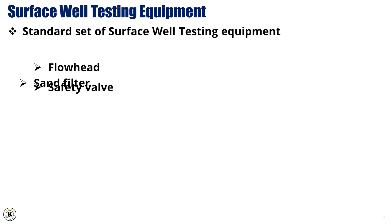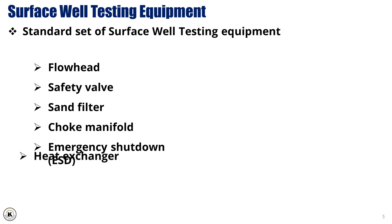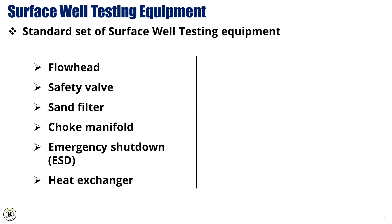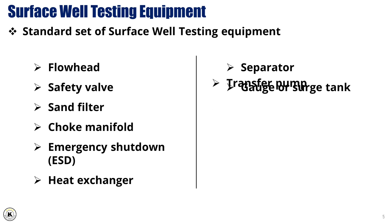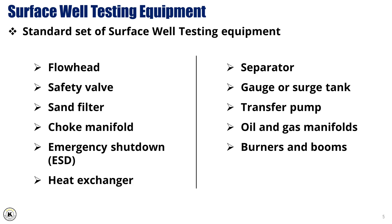A standard set of surface well testing equipment includes a flow head, a safety valve, a sand filter, a choke manifold, an emergency shutdown system (ESD), a heat exchanger, a separator, one or two gauge tanks or surge tanks, a transfer pump, an oil manifold and a gas manifold, and finally one or two burners with burner booms for offshore operation.